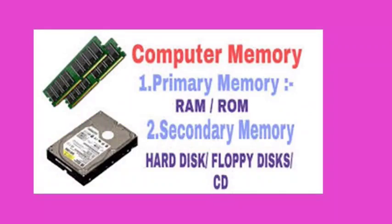The primary memory is again categorized into two types: RAM and ROM. The secondary memory has some storage devices like hard disk, floppy disk, CD, etc.